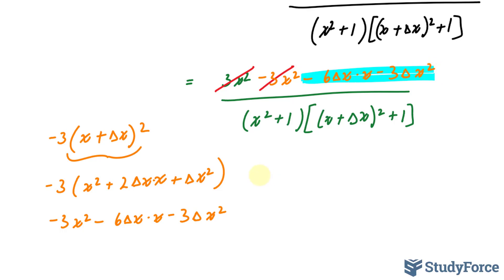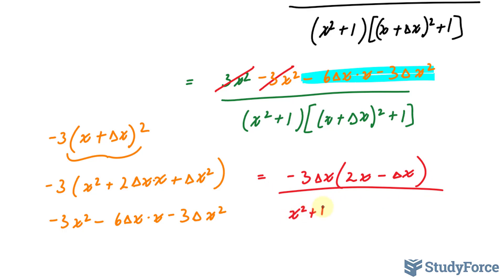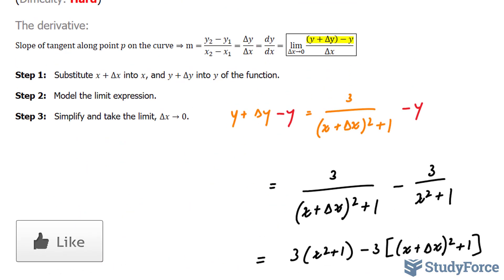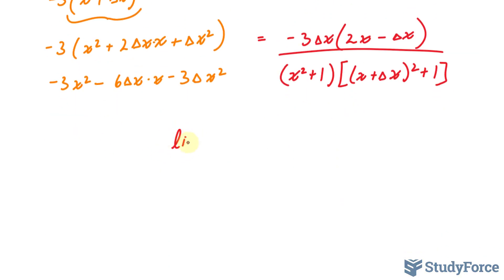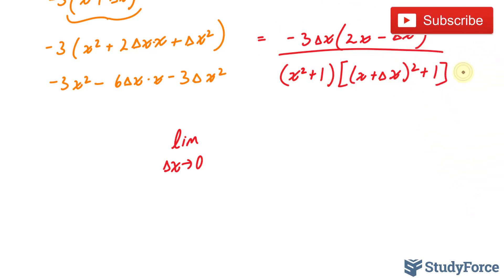This can now be common factored very easily, giving us negative 3 delta x bracket 2x minus delta x, over the same denominator as before. Now we replace this expression into the limit. We end up with the limit as delta x approaches 0 of this expression divided by delta x. Dividing by delta x places an extra delta x in the denominator, so I'll rewrite it with delta x at the bottom.